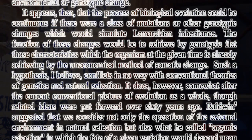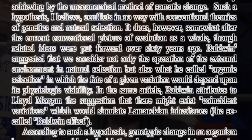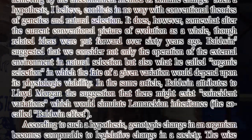It appears, then, that the process of biological evolution could be continuous if there were a class of mutations or other genotypic changes which would simulate Lamarckian inheritance — simulate it. The function of these changes would be to achieve by genotypic fiat those characteristics which the organism at the given time is already achieving by the uneconomical method of somatic change, by plasticity. Such a hypothesis, I believe, conflicts in no way with the conventional theories of genetics and natural selection. It does, however, somewhat alter the current conventional picture of evolution as a whole, though related ideas were put forward over 60 years ago. Baldwin suggests that we consider not only the operation of the external environment in natural selection, but also what he called organic selection, in which the fate of a given variation would depend upon its physiologic viability. In the same article, Baldwin attributes to Lloyd Morgan the suggestion that there might exist coincidence variations which would simulate Lamarckian inheritance — the so-called Baldwin effect.